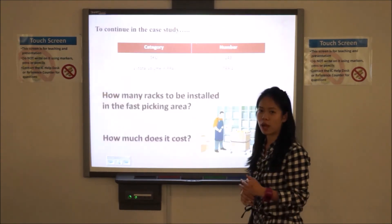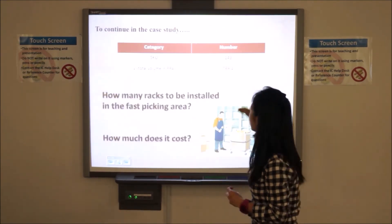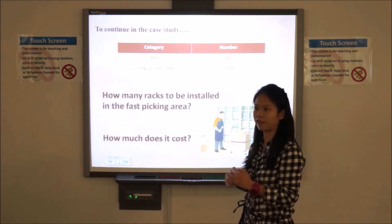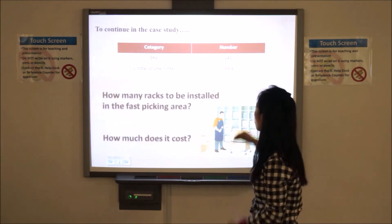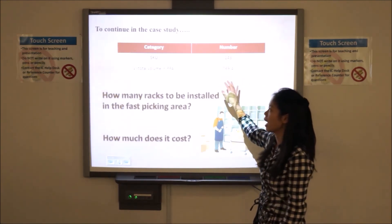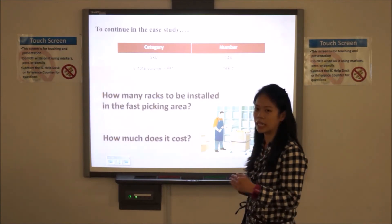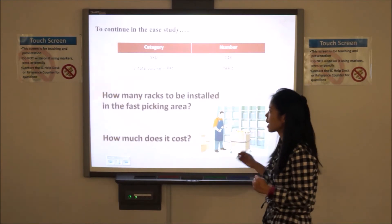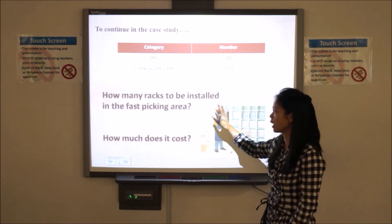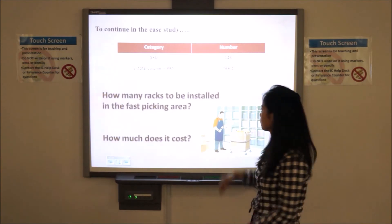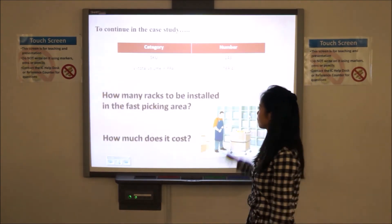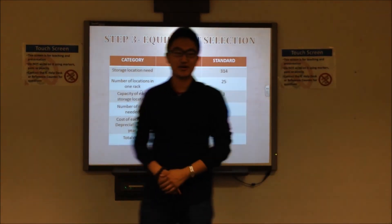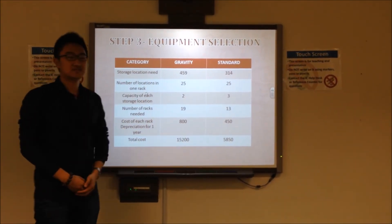Go back to our case. Jasmine told us that we have 143 category A SKU in our fast-packing area and it's almost 770 cubic feet to be stored in the fast-packing area. In the following, Anne will introduce how many racks to be installed in the fast-packing area and the total cost. Okay, thank you Yanis for your introduction. Now, let's see the equipment selection. Which rack is better?